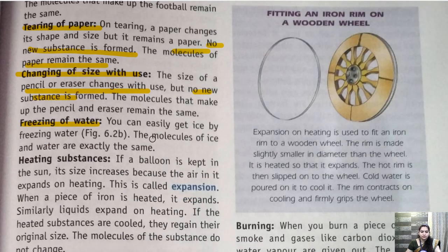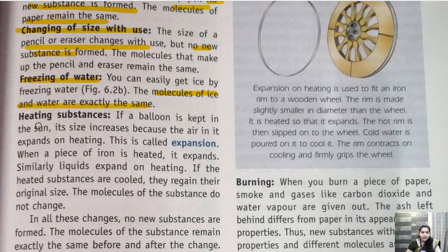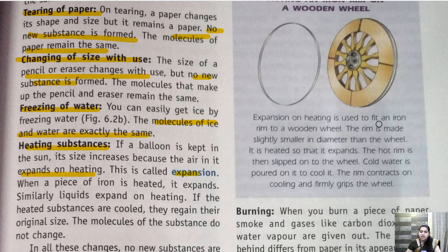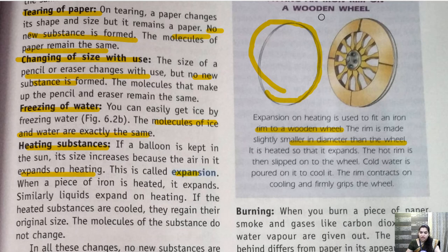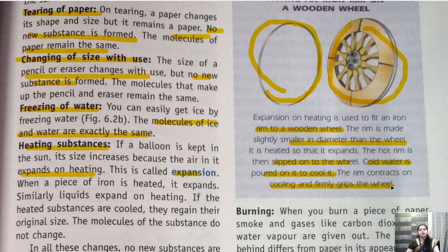Freezing of water — the molecules of ice and water are exactly the same, no new substance is formed. Heating a substance — if a balloon is kept in the sun, its size increases because the air in it expands on heating. This is called expansion. Expansion on heating is used to fit an iron rim to a wooden wheel. The rim is made slightly smaller in diameter than the wheel, it is heated so that it expands, the hot rim is then slipped onto the wheel, cold water is poured onto it to cool it, and the rim contracts on cooling and firmly grips the wheel.